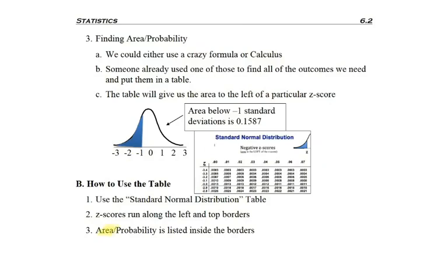And then in the middle of the table would be that area or probability. So all of these four digit numbers that we'll see once we get into the table will be giving us the area and or probability.